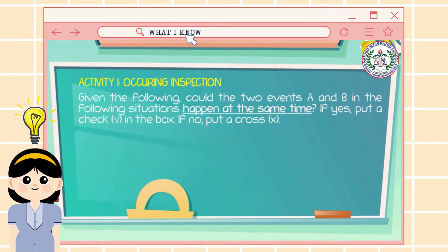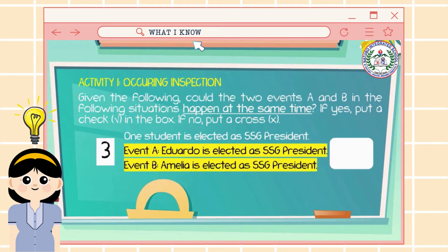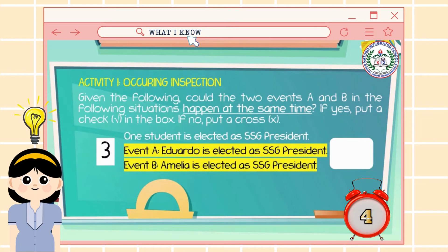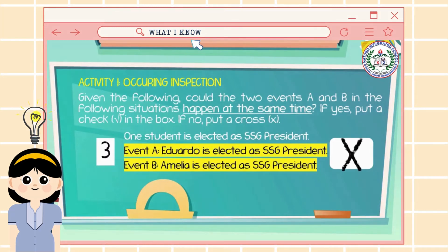Number 3: One student is elected as SSG president. Event A: Eduardo is elected as SSG president. Event B: Amelia is elected as SSG president. The answer is X, because only one student can be elected as SSG president.